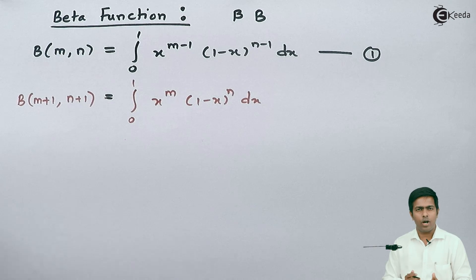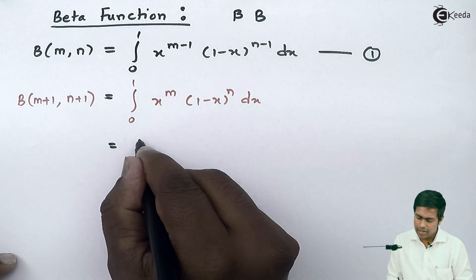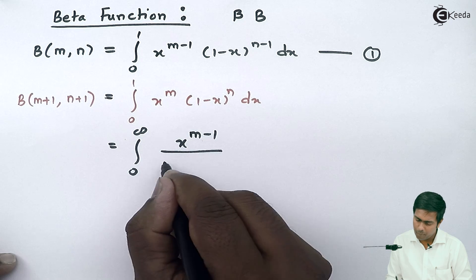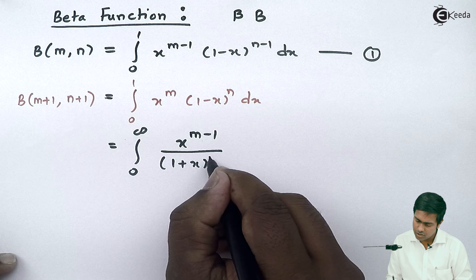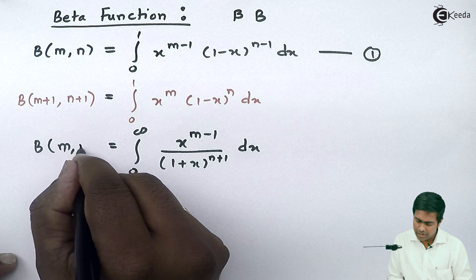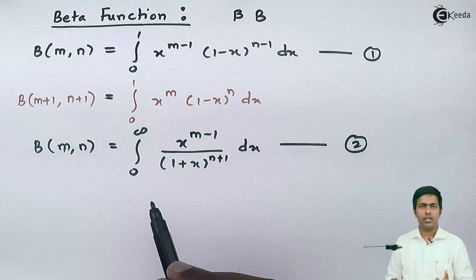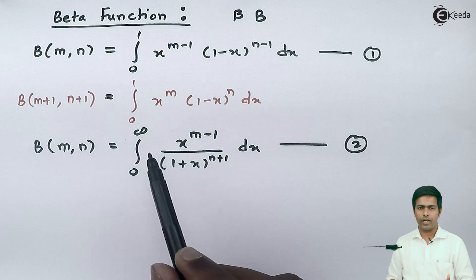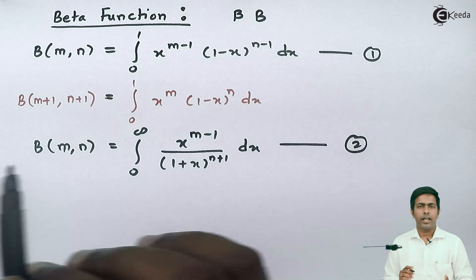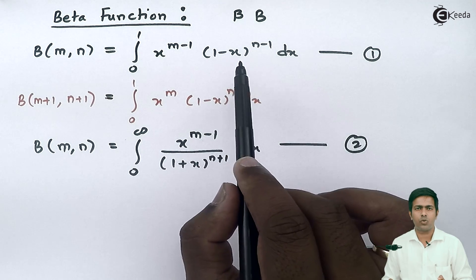We have one more definition of the beta function in terms of integration, given as the integral from 0 to infinity of x raised to m minus 1 over 1 plus x raised to n plus 1 dx. This definition is helpful to solve certain problems where the integration runs from 0 to infinity or is in such a format. These two definitions are in algebraic form.